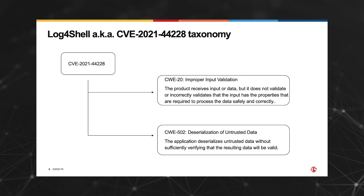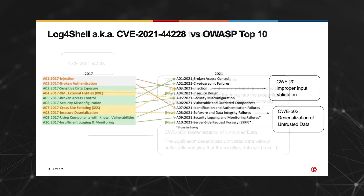Now, to understand how we can stop this attack, we need to take a quick look at its taxonomy. This vulnerability is an instance related to two generic types of weaknesses: deserialization of untrusted data and improper input validation. Mapping these two weaknesses to the OWASP top 10 web application security risks, you will notice that deserialization of untrusted data maps to software and data integrity failures, while improper input validation maps to injection risks.